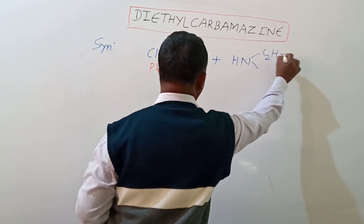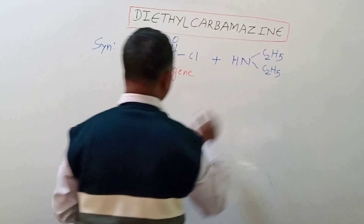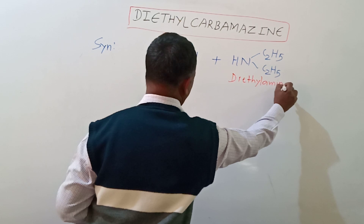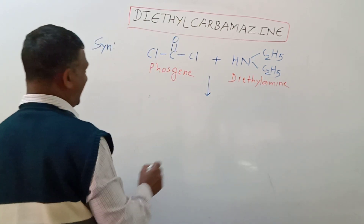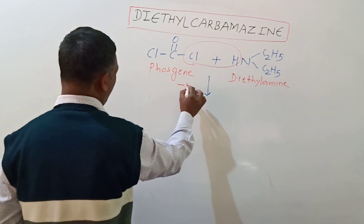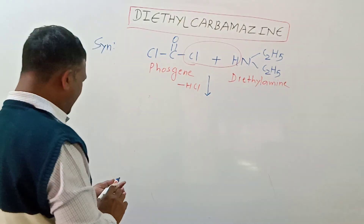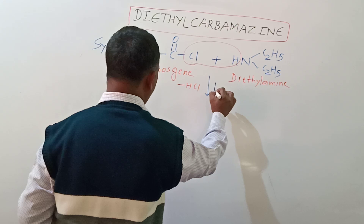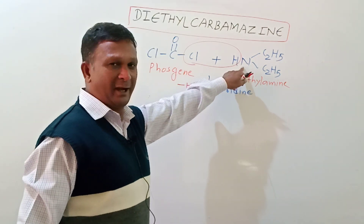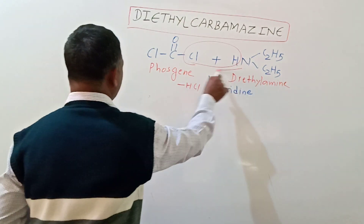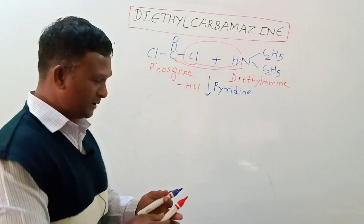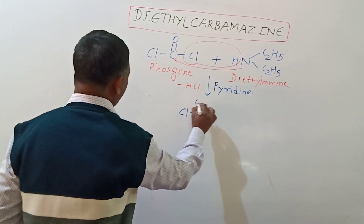Dear students, you can see that from this reaction there is release of an HCl moiety. The reaction takes place in the presence of pyridine. This is a very famous reaction — the secondary amino group attacks on the carbonyl carbon to bring about the nucleophilic acyl substitution reaction, and this gives us the formation of an intermediate.